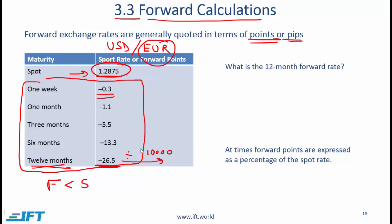The way you remember this — if you have four decimal places in your quoting convention, then to convert points into a decimal you take the points number and divide by 10,000. 10,000 has four zeros, so this four and the four zeros is the same number.